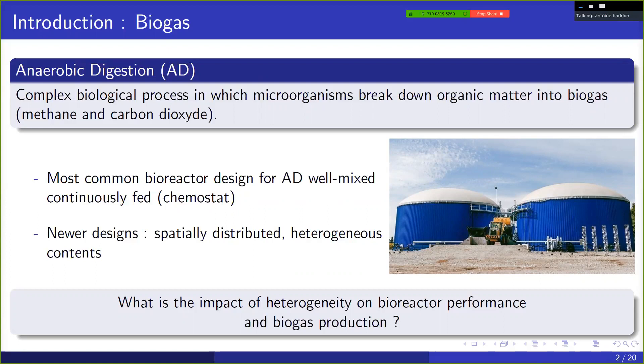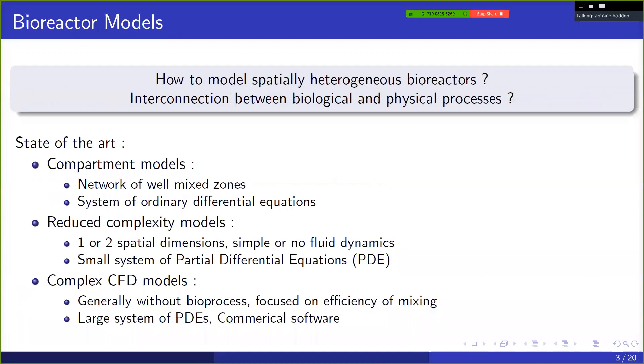And so the most common type of bioreactor that's used for this bioprocess is a well-mixed bioreactor. However, there were some newer types of reactors that consider a spatial distribution and so basically the contents of the reactors are not homogenous. And so there's an important research question nowadays: what's the impact of heterogeneity on bioreactor performance.